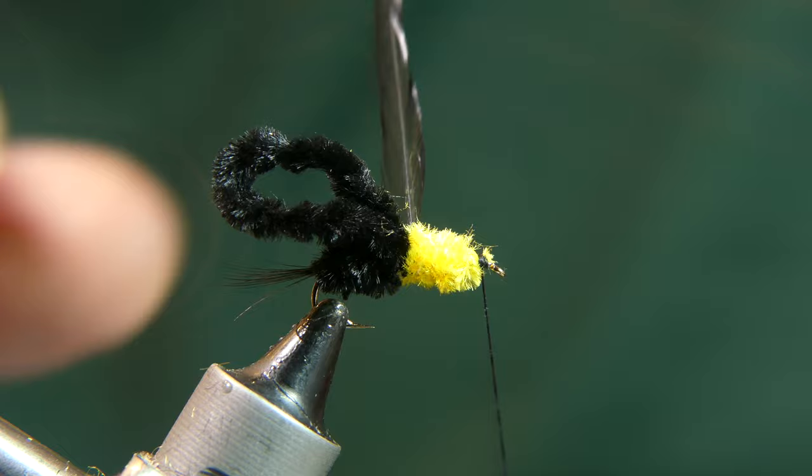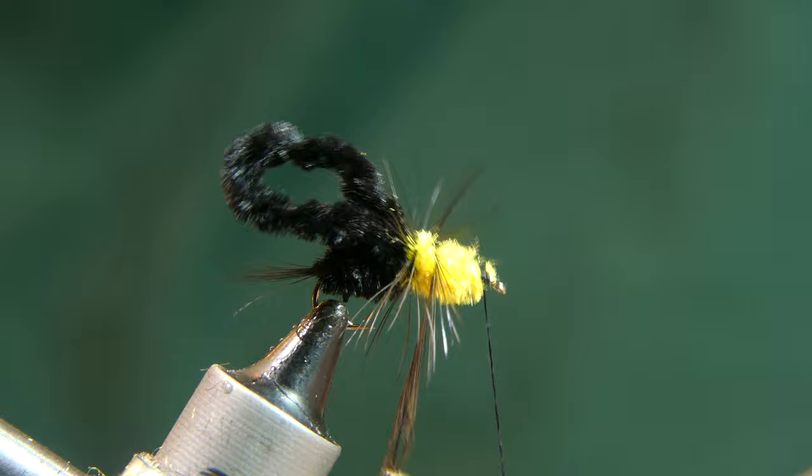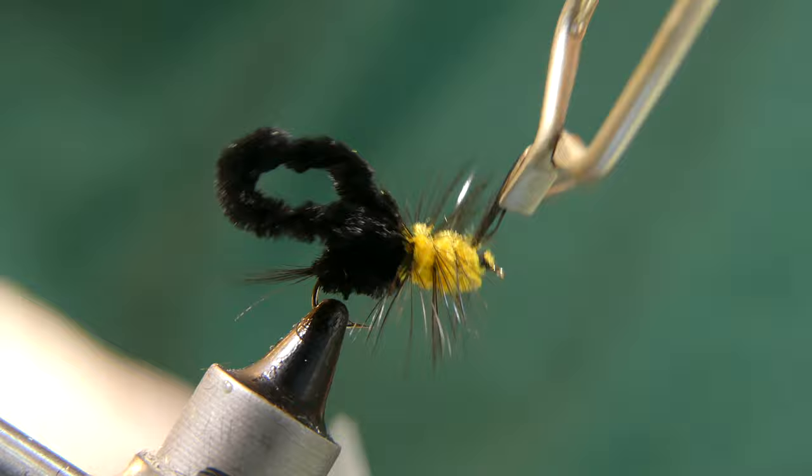With your hackle pliers, palmer the hackle up through the gold chenille, giving it three or four wraps. Tie it off and cut away the tip.